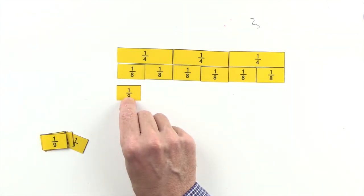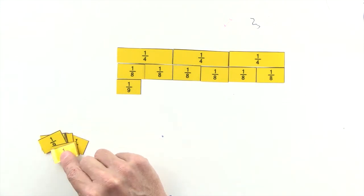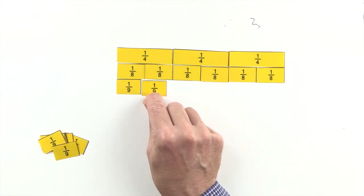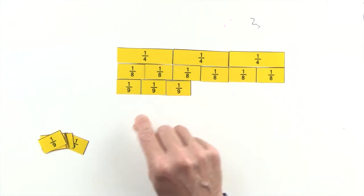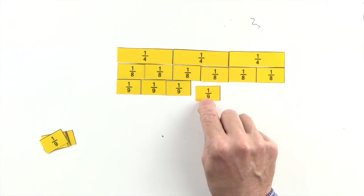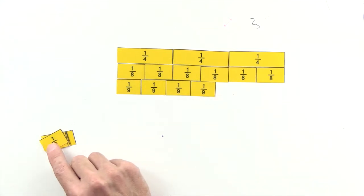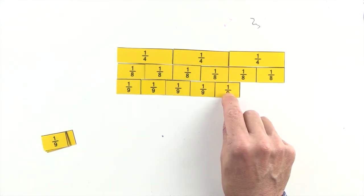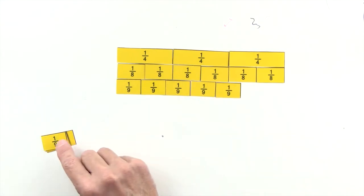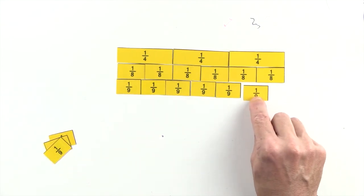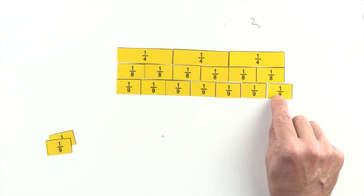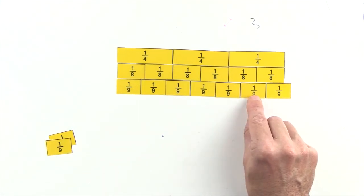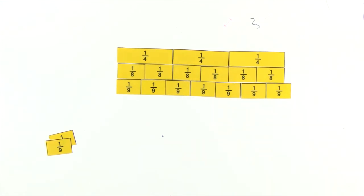One ninth, two ninths, three ninths, four ninths, five ninths, and six ninths are less than three quarters. And seven ninths are greater than three quarters. So we can't use ninths to make an equivalent fraction to three quarters.